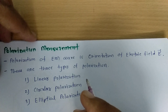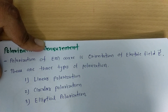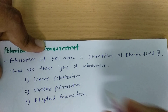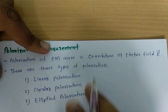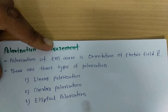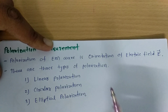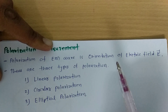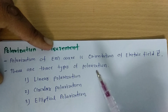I will explain one very simple experimental setup by which we can easily have a measurement of polarization. First of all, one should know that polarization is the orientation of the electric field, so ultimately we are dealing with measuring the orientation of the electric field.